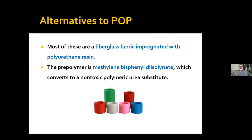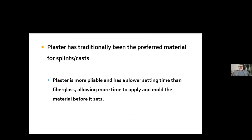Alternatives to POP: most are fiberglass fabric embedded with polyurethane resin. The prepolymer is methylene bisphenyl diazoline, which converts to a non-toxic polymeric urea substitute. They are lightweight, more strong, radiolucent, and come in different colors. However, we should not apply these in acute settings or fresh fractures when we need molding — molding is a problem with fiberglass bandages. Plaster has traditionally been preferred — it is more pliable and has a lower setting time than fiberglass, allowing more time to apply and mold the material before it sets.